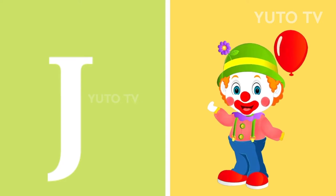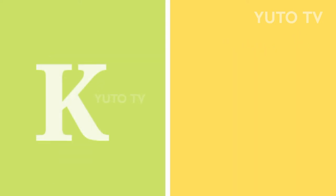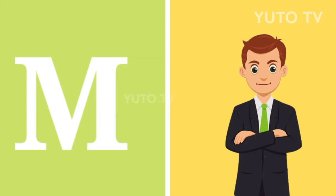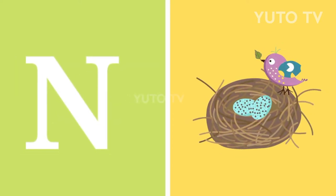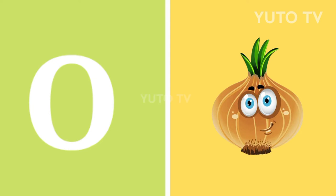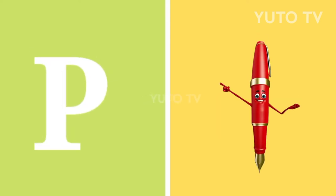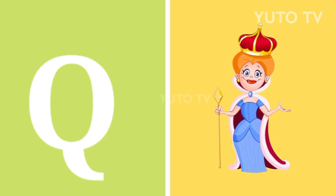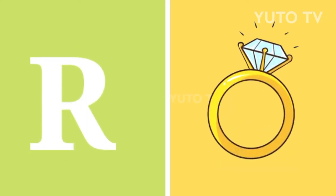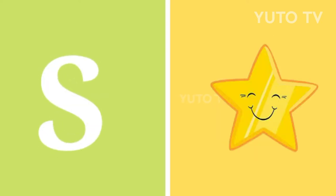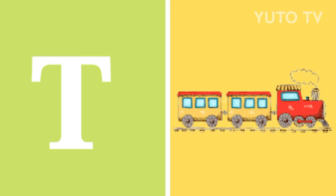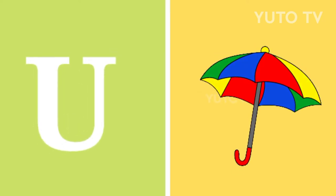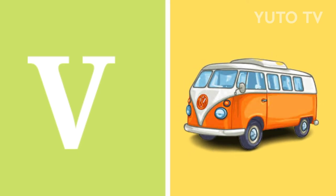J for Joker, K for Kite, L for Lamp, M for Man, N for Nest, O for Onion, P for Pen, Q for Queen, R for Ring, S for Star, T for Train, U for Umbrella, V for Van.